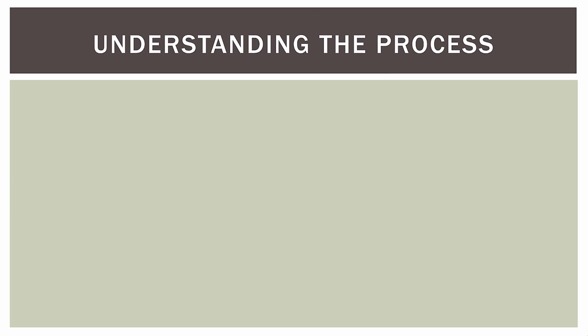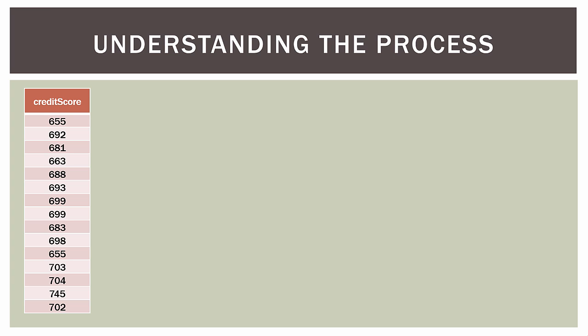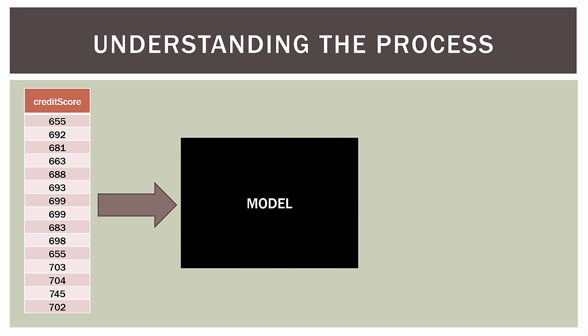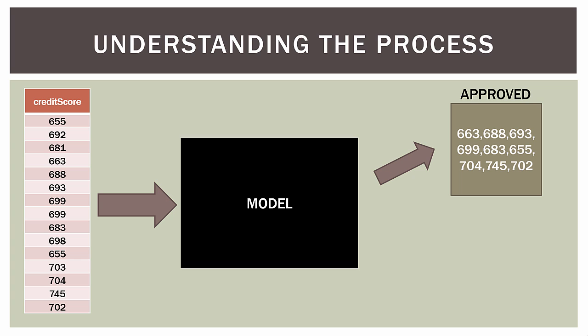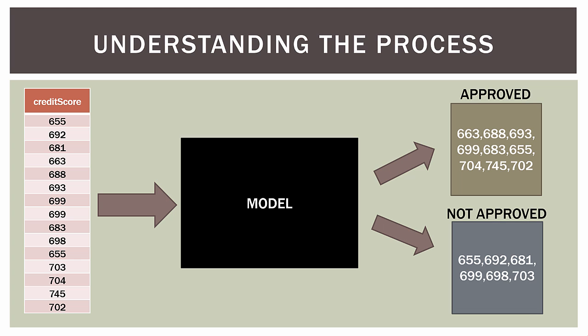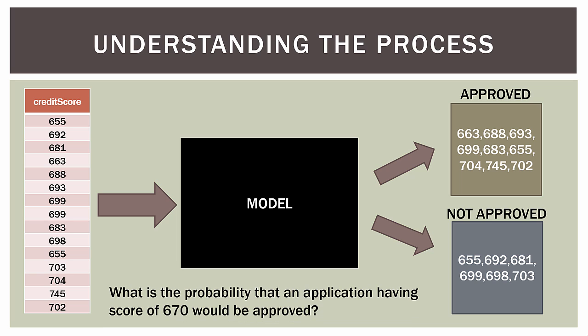Let's try to understand and visualize the problem. An applicant walks into the bank with some credit score. The bank feeds that credit score into their lending model, and when it comes out, the application is either approved or not approved. This black box in the middle is what we're trying to understand. We could ask: what is the probability that an application with a credit score of 670 would be approved? Credit scores go into a decision model by the bank or lender, and the bank puts the application into the approved or not-approved category. That's basically what we're trying to model in this logistic regression problem.